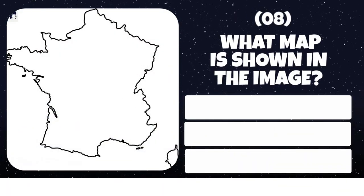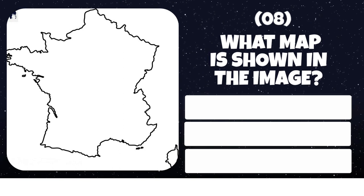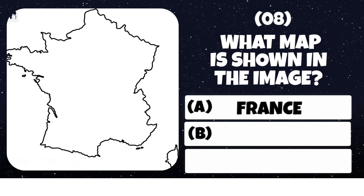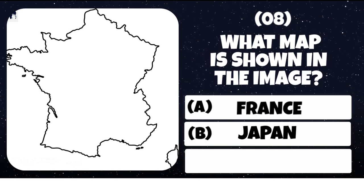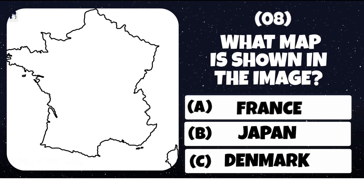Question number 8. What map is shown in the image? Option A: France. Option B: Japan. Option C: Denmark.